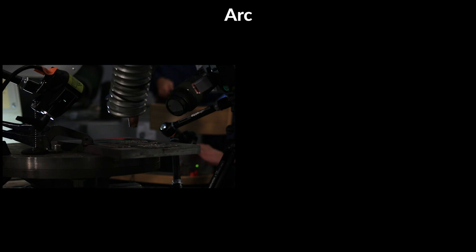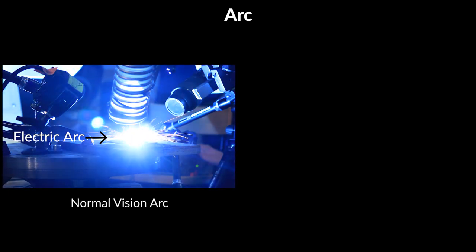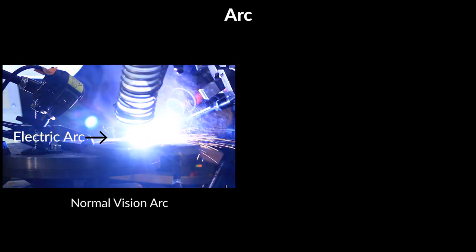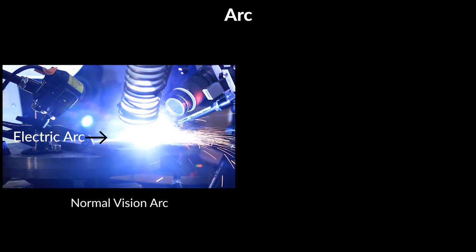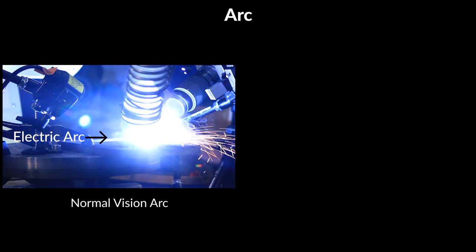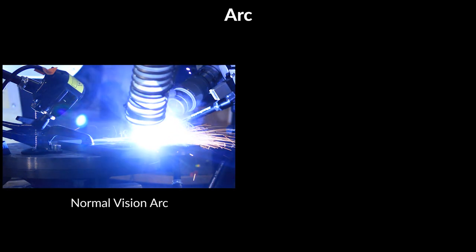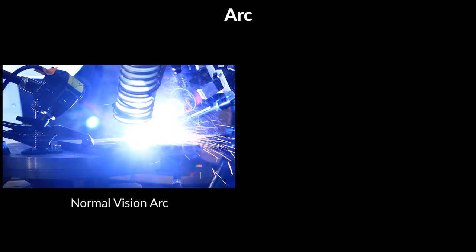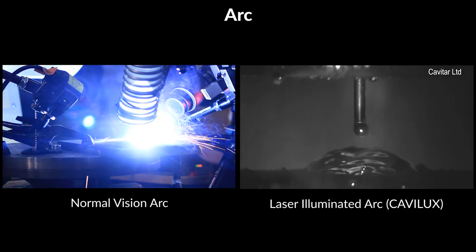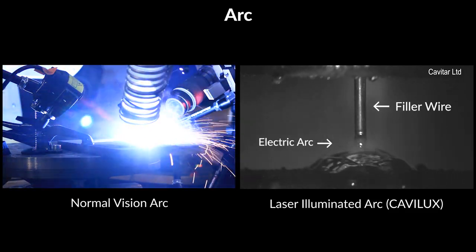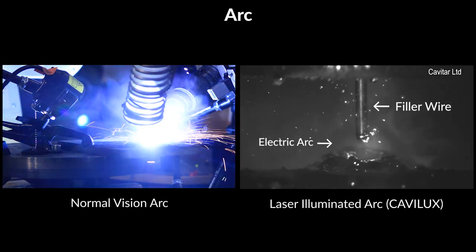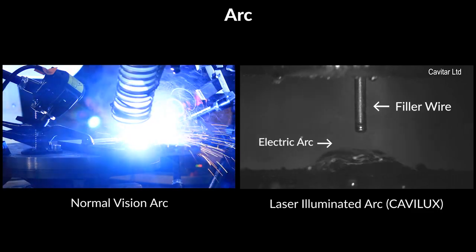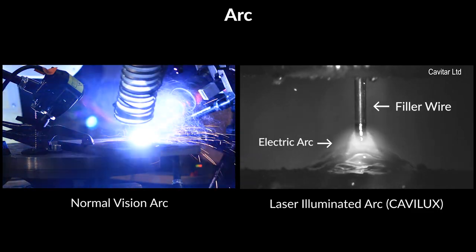4. Arc. An electric arc forms between the filler wire or the electrode and the workpiece in arc welding. The arc is the result of an electric discharge and it is what heats up the metal in welding. Due to its high levels of brightness, the arc is difficult to visualize. Laser illumination is all but necessary to capture the properties of the arc, as most of the brightness can be filtered out. Schlieren setups with high power light sources can be used to study how the arc interacts with the workpiece.